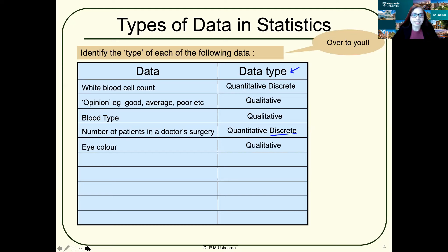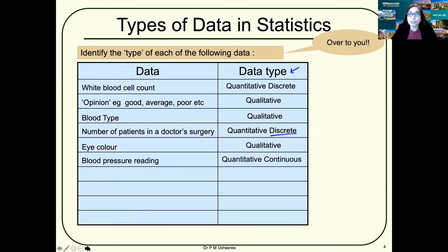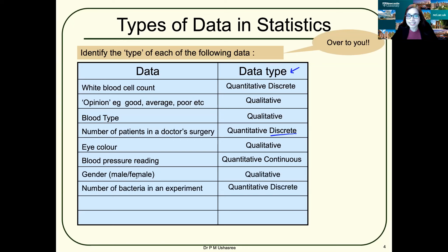Color is qualitative — you can categorize it. Something with decimal places is continuous. And number of bacteria is discrete — you can't have 10,000.5 bacteria; you can have either 10,000 or 10,001 bacteria.